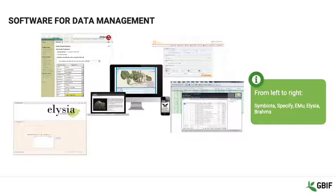There are many choices which vary in terms of cost and support, but a few are shown here, from left to right: Symbiota, Specify, Emu, Elysia, and Brahms.